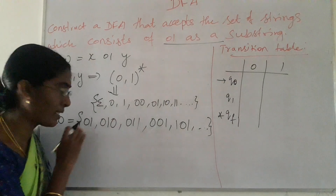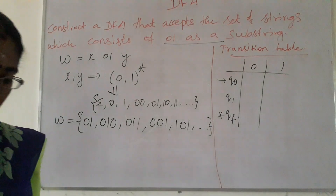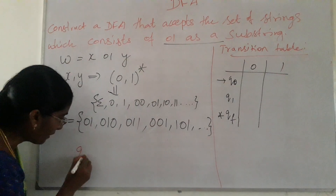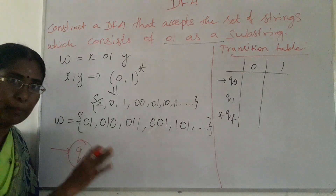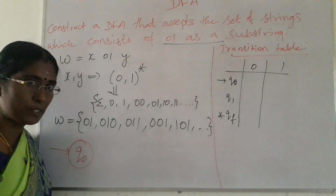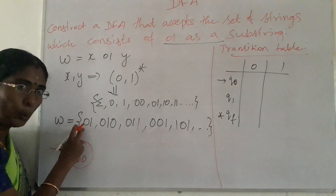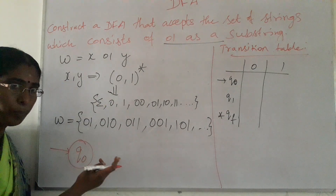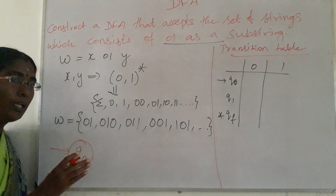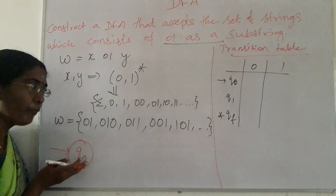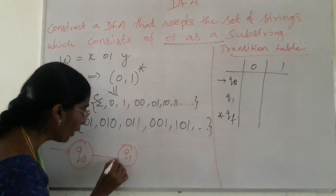We have to construct a DFA that should accept this particular set of strings. Consider Q0 as the start state. The minimum input symbol is '01' itself — it should not accept epsilon, and it cannot move from one state to another for epsilon. So the first minimum input symbol is '01'. If you are reading symbol '0', it may lead to a final state, so we move in the forward direction. For the first '0', we move from state Q0 to Q1.